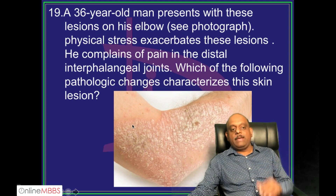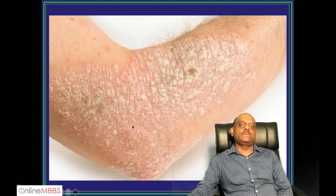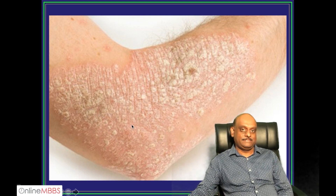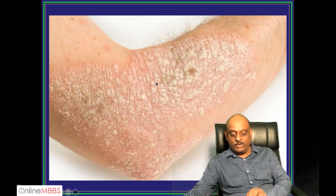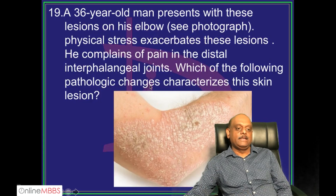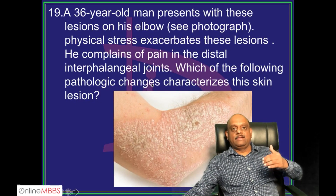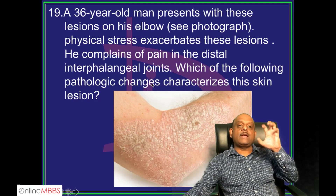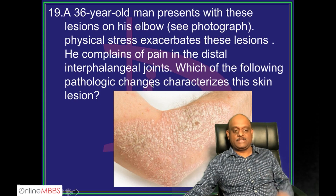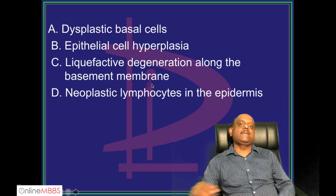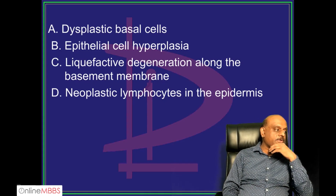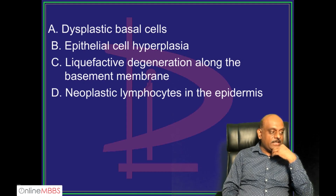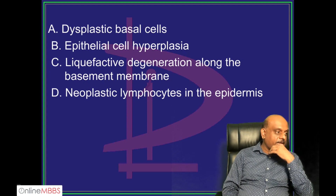A 36-year-old man presents with lesions being shown in the picture. Whenever physical stress occurs, these lesions are exacerbating. He also complains of pain in the distal interphalangeal joint. Which pathological changes characterize these lesions and what is your diagnosis? Who is going to give me the answer?